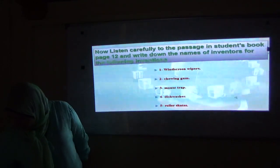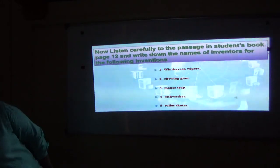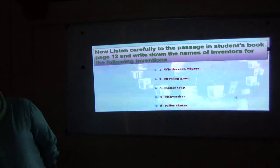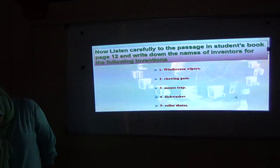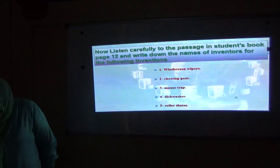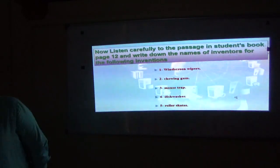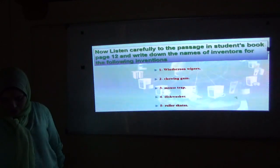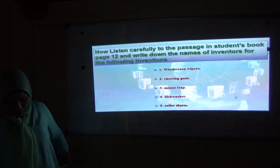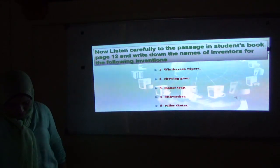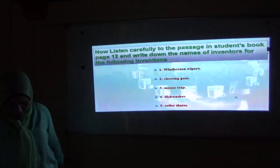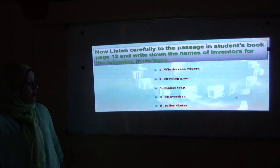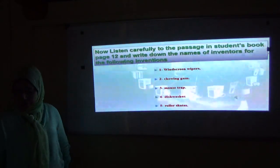In 1903, Mary Anderson and a friend were driving to New York. It was raining heavily and they had to open the windows of their car and put their heads out to see better. Suddenly Mary had an idea. She invented a moving arm made of metal with a piece of rubber on it. The driver could operate it from inside the car without opening the window. People liked her invention because it helped them to drive safely when it was snowing or raining. Mary Anderson invented the windscreen wiper.